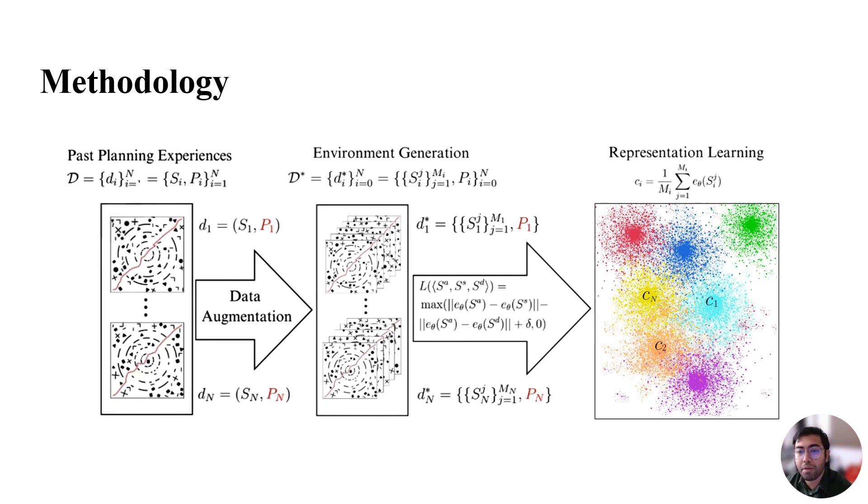The planning problem encoder E theta is then trained to minimize a triplet loss by using the following equation. The representation space will contain data points from N different latent clusters corresponding to the N existing motion plans, where Ci is the cluster center of each cluster.